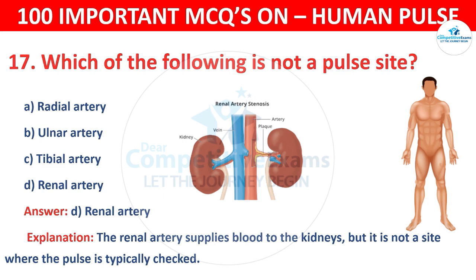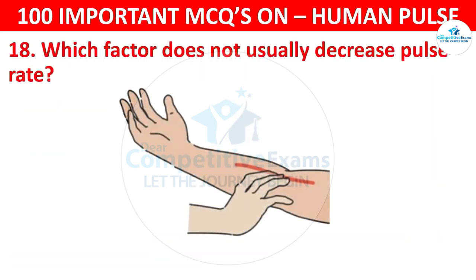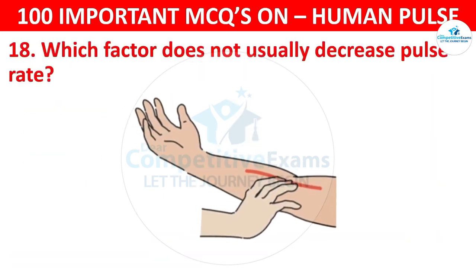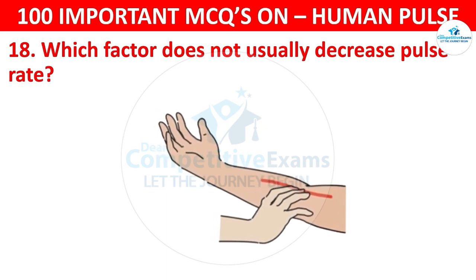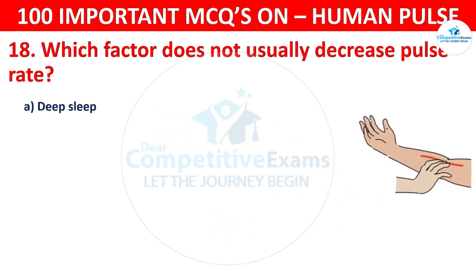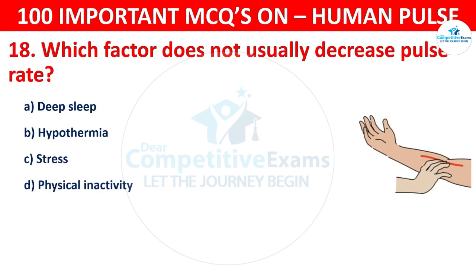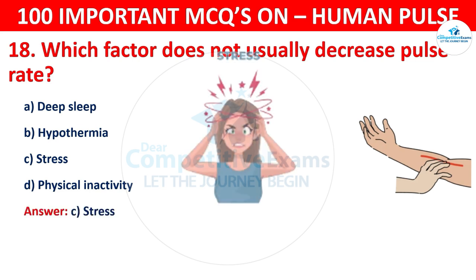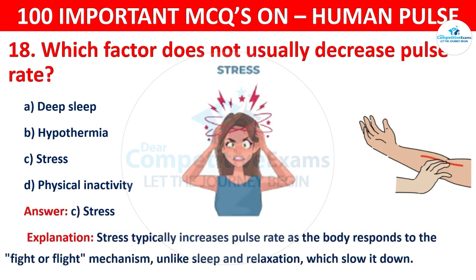Question number 18: Which factor does not usually decrease pulse rate? Your options are: Deep sleep, Hypothermia, Stress, or Physical inactivity. The correct answer is C, that is stress. Stress typically increases pulse rate as the body responds to the fight-or-flight mechanism, unlike sleep and relaxation which slow it down.